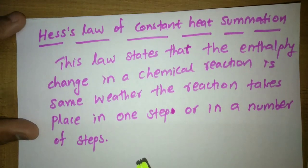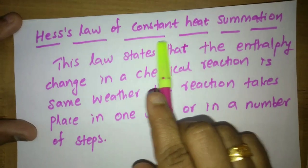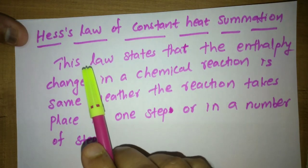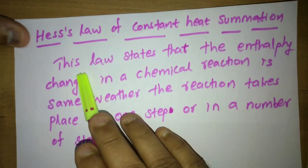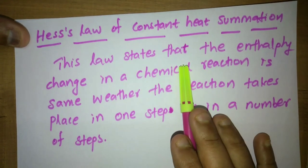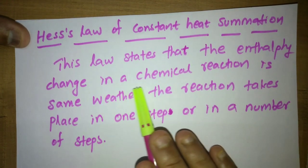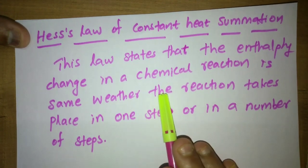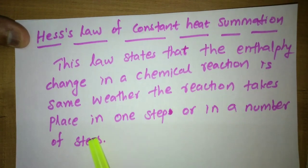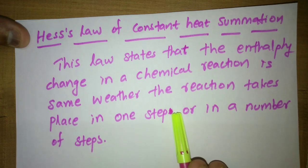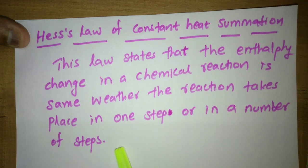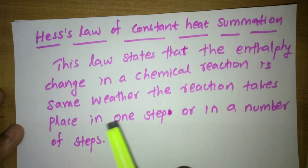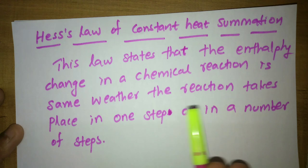Hello everyone. Today's topic is Hess's Law of Constant Heat Summation. This law, from thermodynamics, states that the enthalpy change in a chemical reaction is the same whether the reaction takes place in one step or in a number of steps.